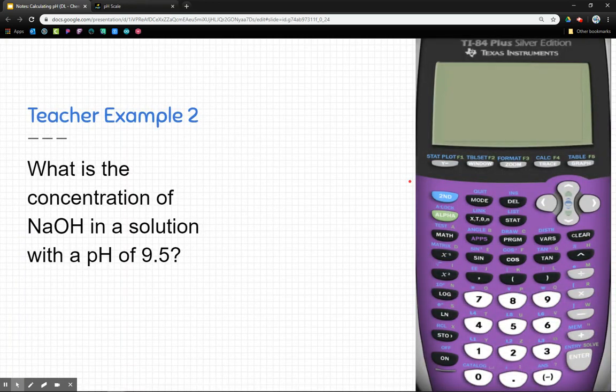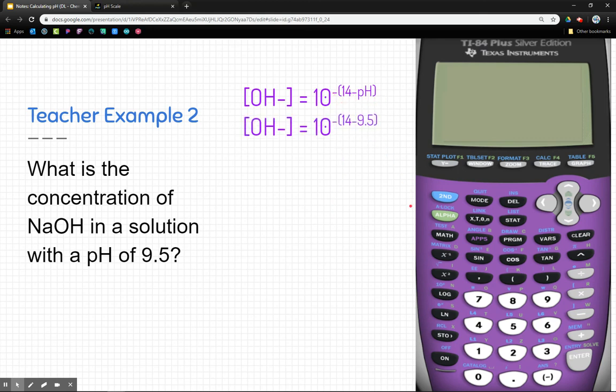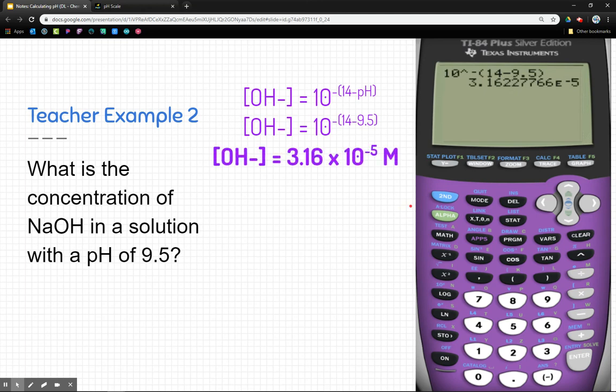Now, what about the base? So here we have a base that says, what is the concentration of sodium hydroxide? Remember, hydroxide is a base. So we're going to go ahead and figure this out. We have a pH of 9.5. And so I'm going to take 10 to the negative number, and then it's 14 minus 9.5. And then plugging that in my calculator, it's going to look something like that. So the concentration of my base here is 3.16 times 10 to the negative 5 molar. Not too hard.